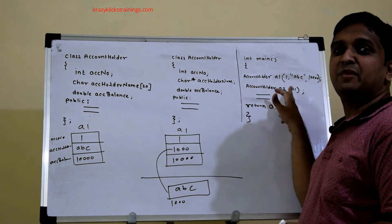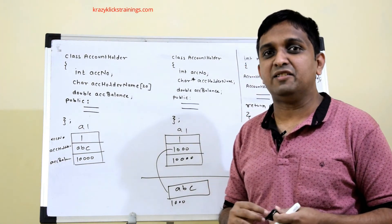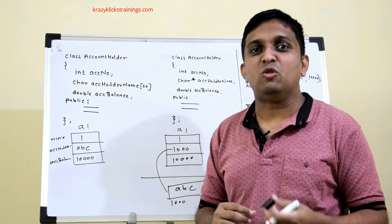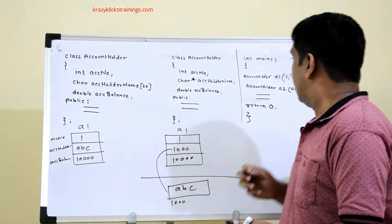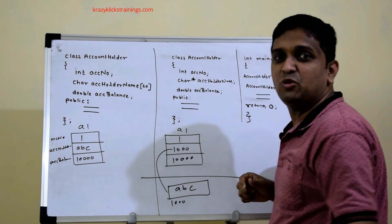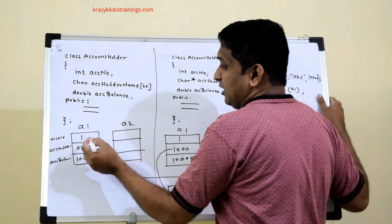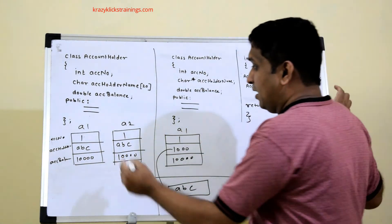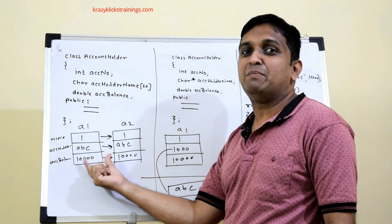For the character array class, when a2 is declared it allocates 32 bytes. The compiler's copy constructor copies the account number, the name array, and the balance value directly — member-wise — into a2. This member-wise copy is called shallow copy. For the pointer class, a2 allocates 16 bytes and the compiler again does shallow copy.